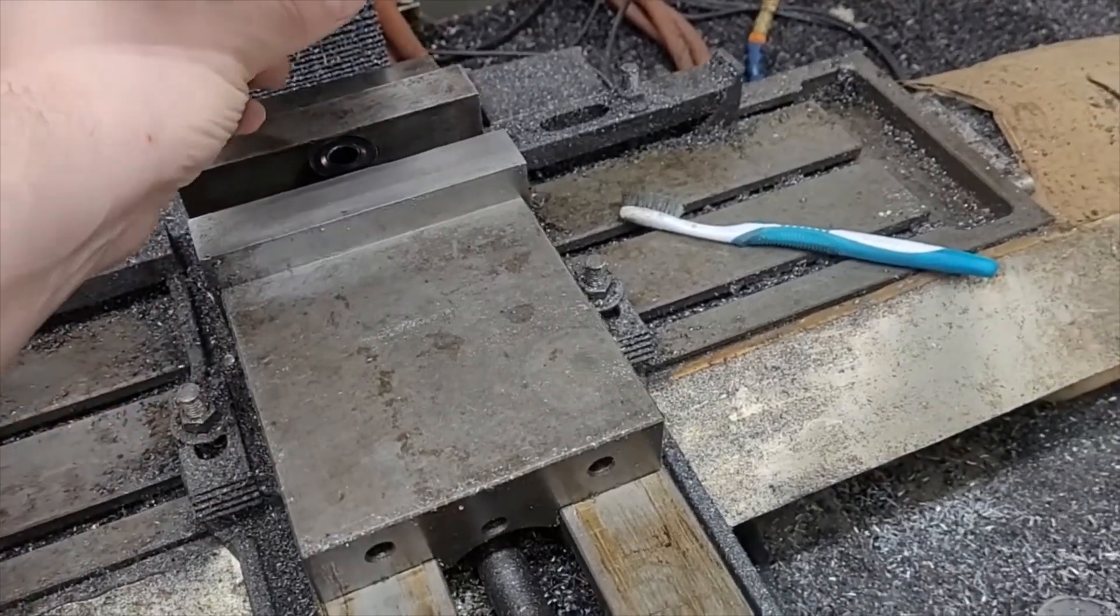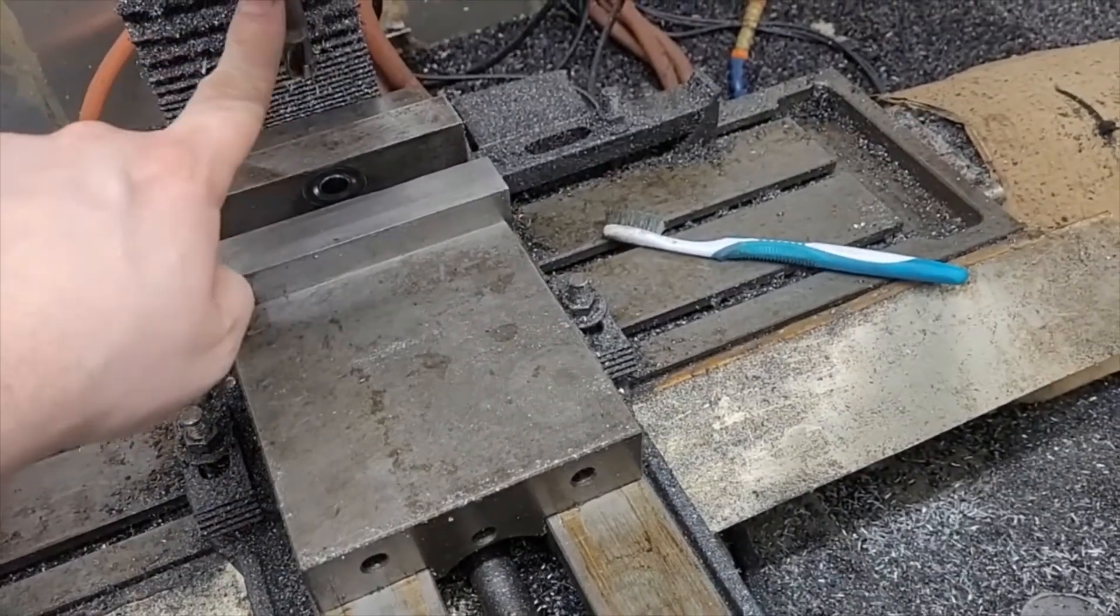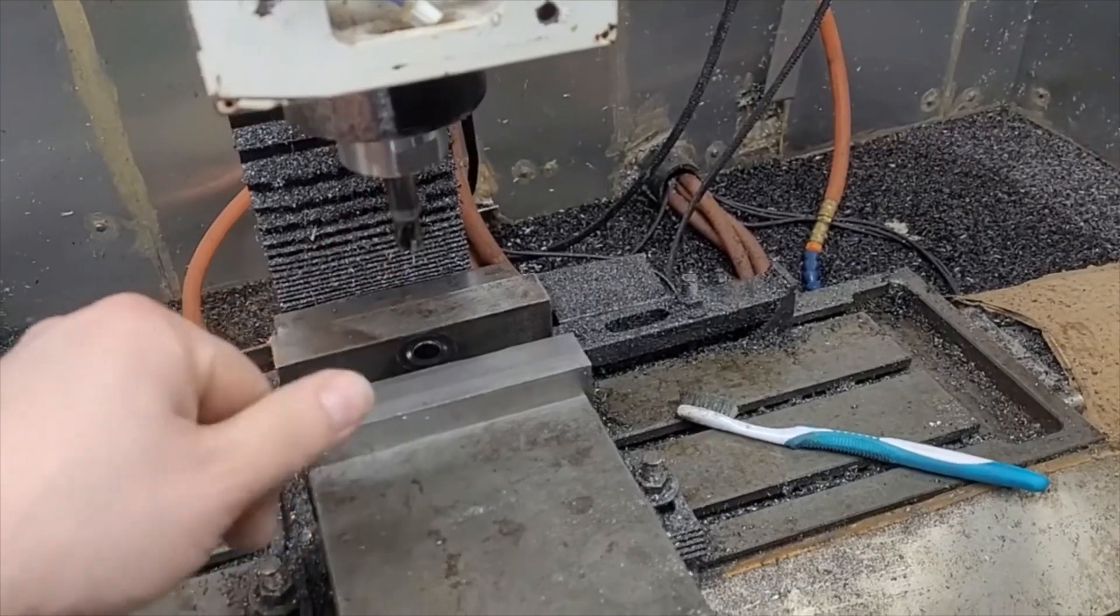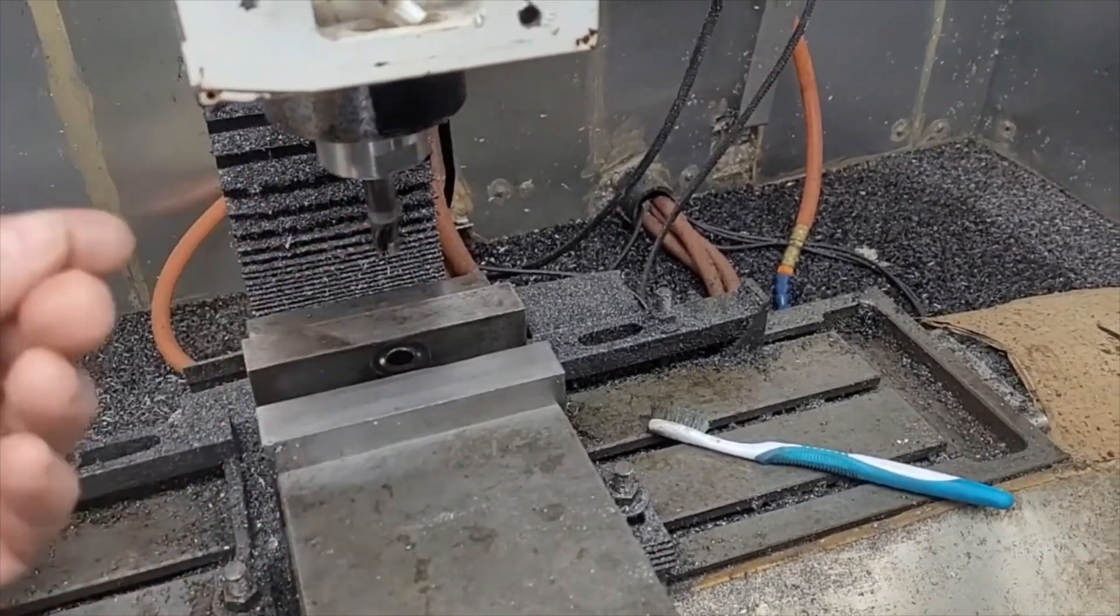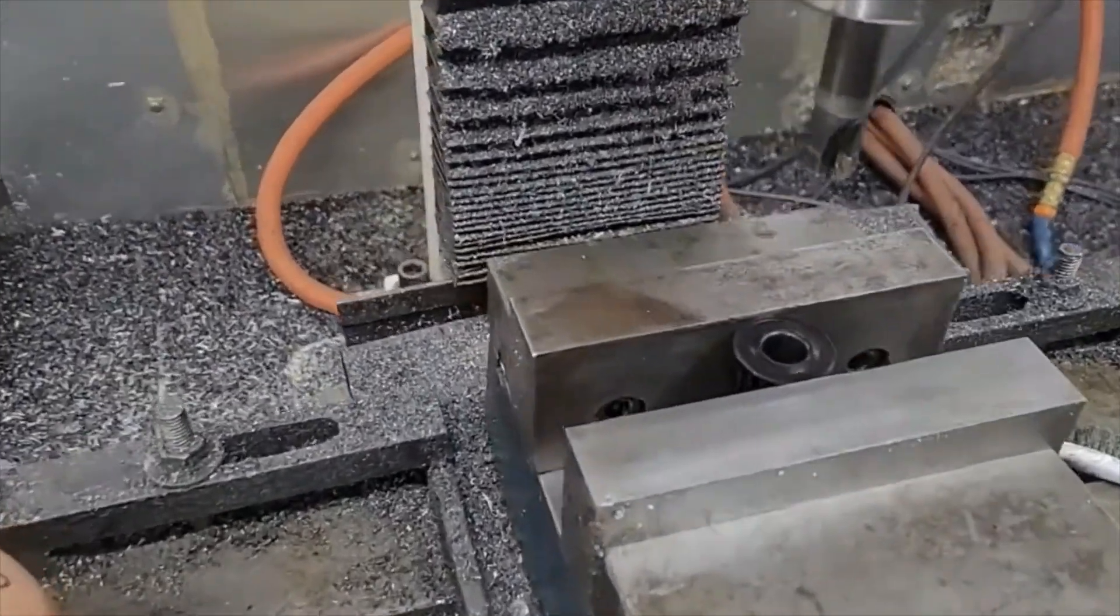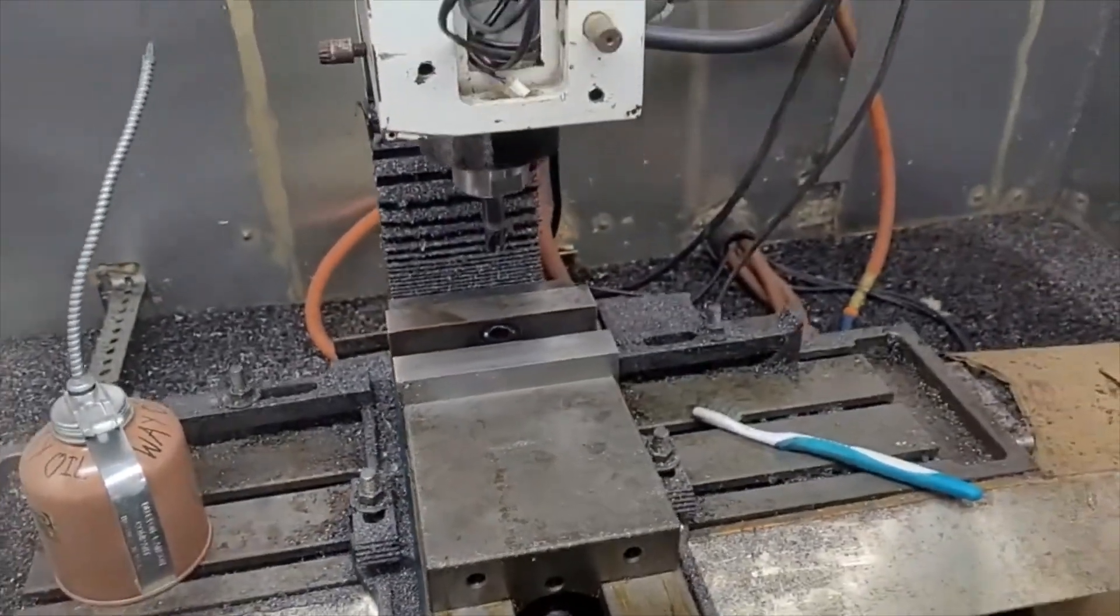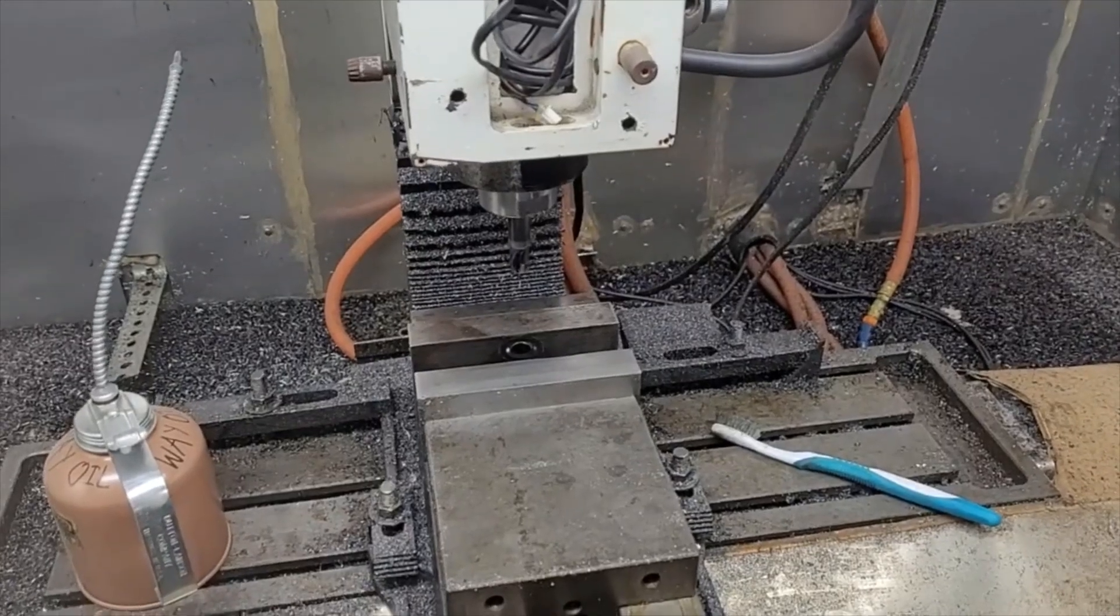We are going to go now that we're clamped up and we got our zero. We got to change this out for an end mill and we got to make a program. So I'm going to go create the program now, and then when I come out here we'll just load the program, put the cutter in and run this. With any luck, we'll have a bore that's going to fit that mandrel we machined.